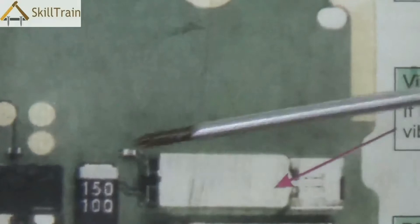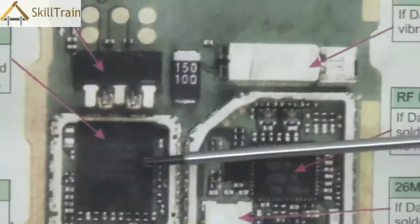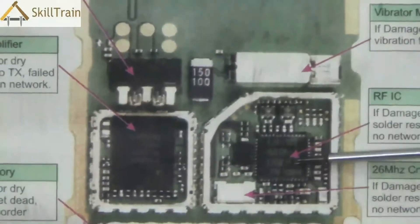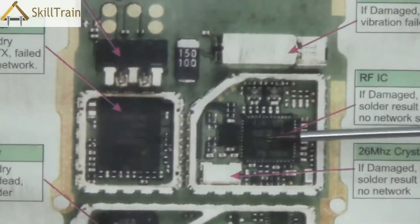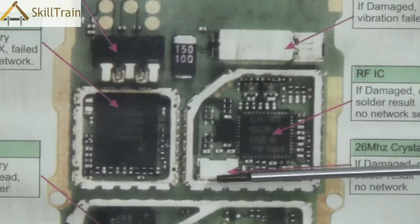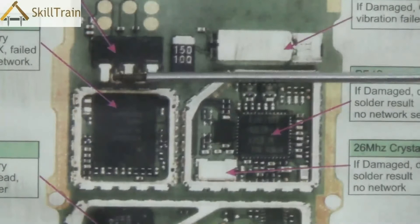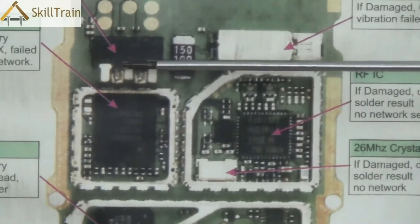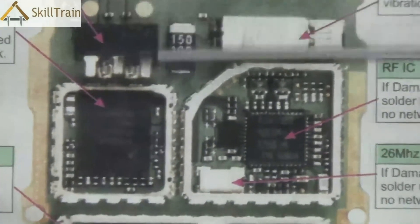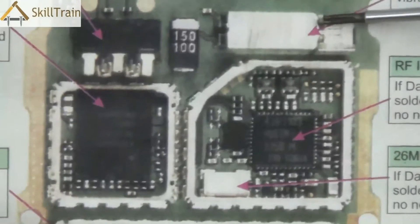Right next to that is the vibrator, which vibrates whenever you get a ring. Underneath that you have the PFO — in the earlier mobile PCB we also saw the PFO, which is the network component. On the right hand side is also a network component section where you see the network IC or RFIC. Underneath that is a crystal. The RFIC is a critical component of the network part of the mobile phone and stands for radio frequency.